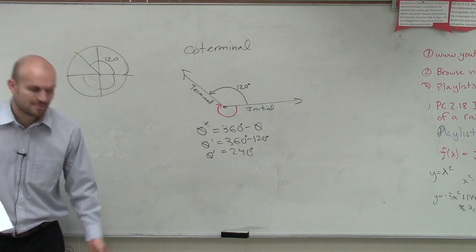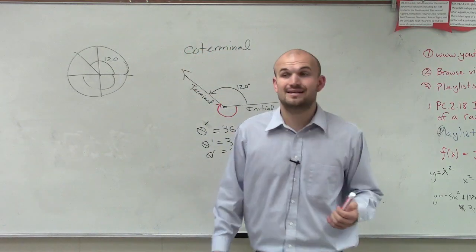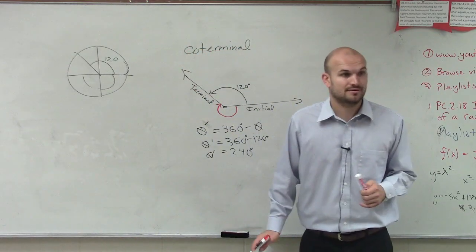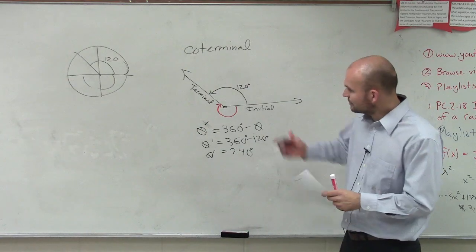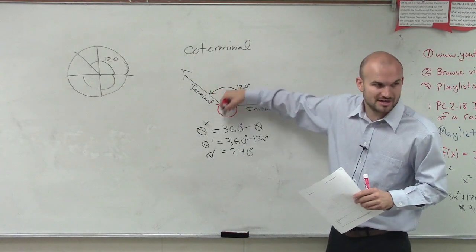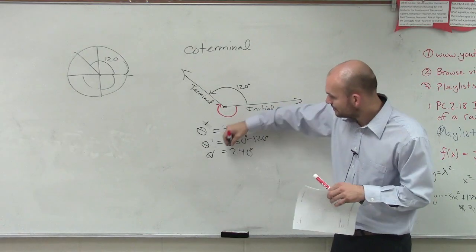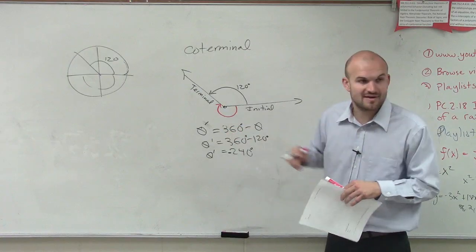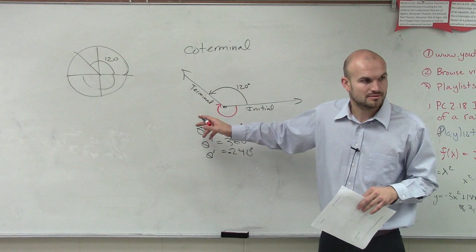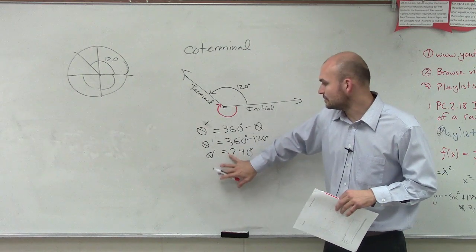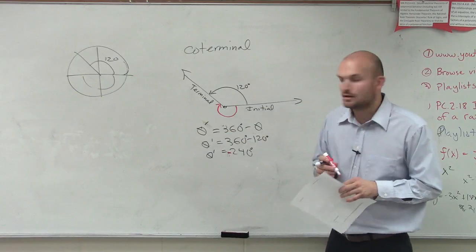So now, usually ladies and gentlemen, I'm not going to ask you to tell me one coterminal angle. I'm usually going to say give me a positive and give me a negative coterminal angle. So what we notice though is this is in the negative direction, isn't it? So the value is still negative. However, this is going to be a negative angle. It's not 240 in the positive direction, it's 240 in the negative direction. So you've got to remember when you go in that negative direction, you've got to give it that negative sign.